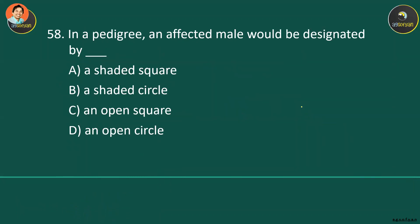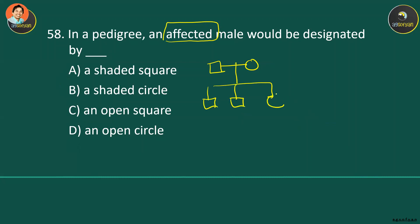In a pedigree, an affected male would be designated by a shaded square. 'Affected' means the individual expresses the specific trait or disease being tracked. A shaded area indicates the individual is affected by that specific trait.